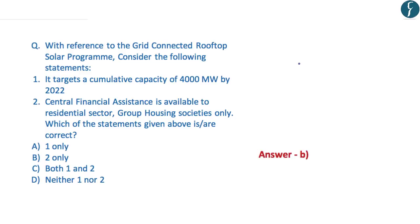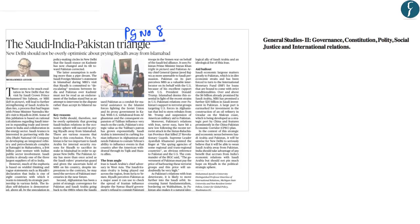The first statement — that the grid-connected rooftop solar program targets a cumulative capacity of 4,000 megawatts by 2022 — is incorrect, because it aims at 40,000 megawatts by 2022. The second statement — that central financial assistance is available to the residential sector or group housing societies only — is correct. Therefore, the correct answer is B, that is, statement two only.